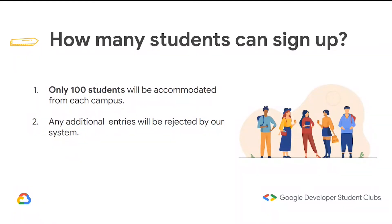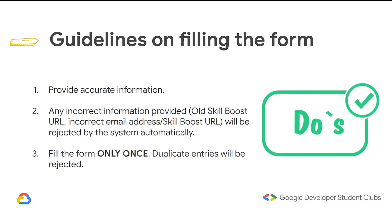Any additional entries beyond 100 will be rejected by the system — even the 101st entry will be rejected. Provide accurate information, as incorrect details like an old Skill Boost URL or incorrect email address will be automatically rejected by the system after a data check. Fill the form only once — duplicate entries will be rejected, and only the first entry will be accepted; filling twice wastes a spot for someone else.